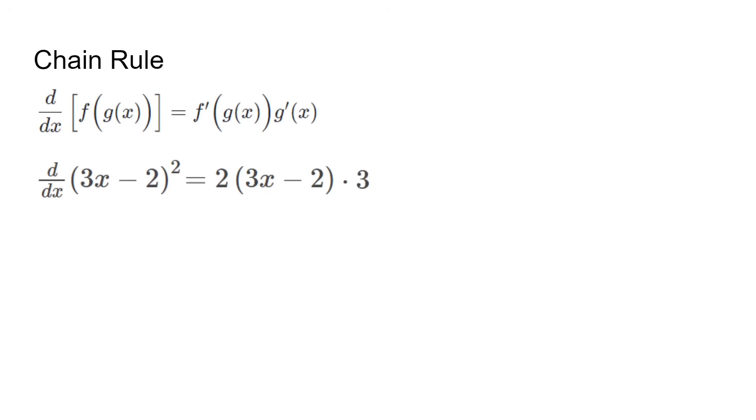This also applies for powers of trig and log functions. For cosine cubed of 4x, we have three layers of chain rule. The outermost is a cubed function, then the cosine, then 4x. We start from the outside to get 3 times cosine 4x to the power of 2, then multiply by negative sine 4x, then finally multiply by 4.